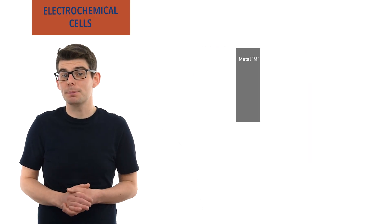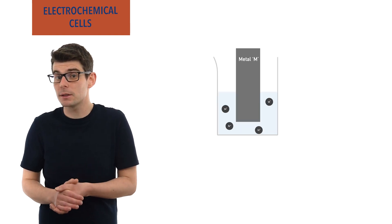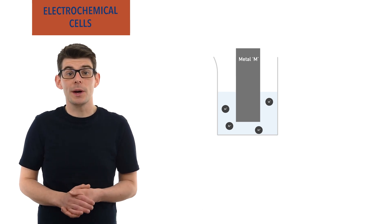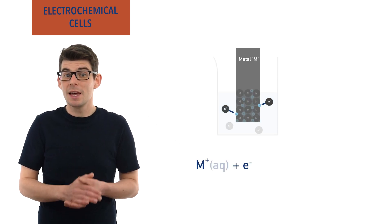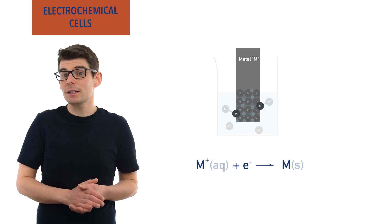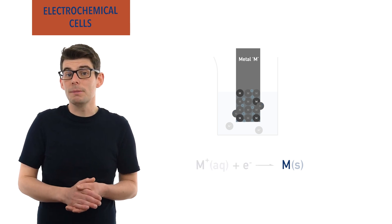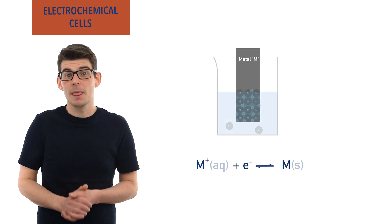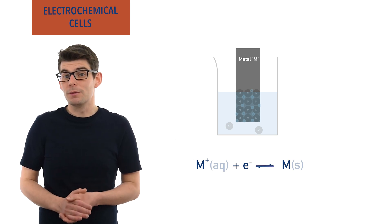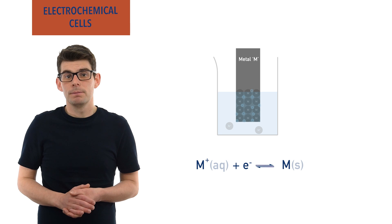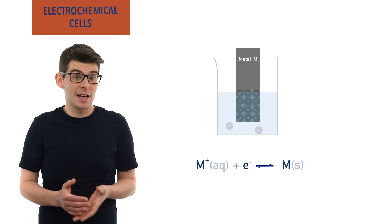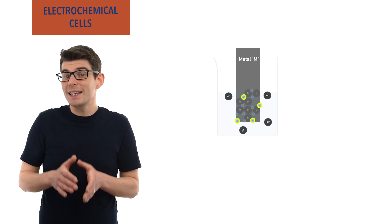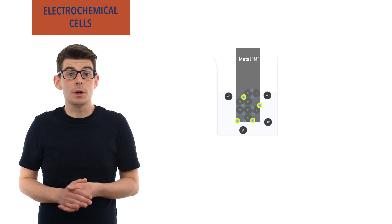When a solid piece of metal is placed in a solution that contains ions of the same metal, an equilibrium is established between them. We can show this equilibrium as a half equation, with the metal ions gaining electrons to be reduced into the solid metal and at the same time atoms of the solid metal being oxidized into metal ions in the solution. The position of this equilibrium is based on how reactive the metal is.